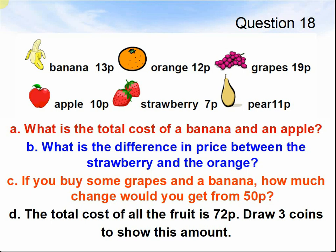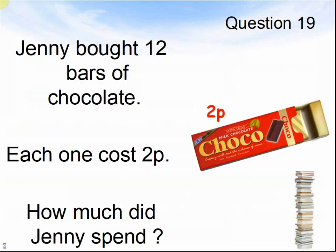Here comes question 19. Jenny bought 12 bars of chocolate. Each one cost 2 pence. How much did Jenny spend? Pause the video until you are ready for question 20.